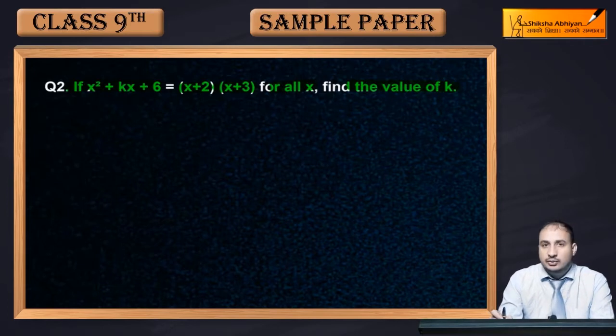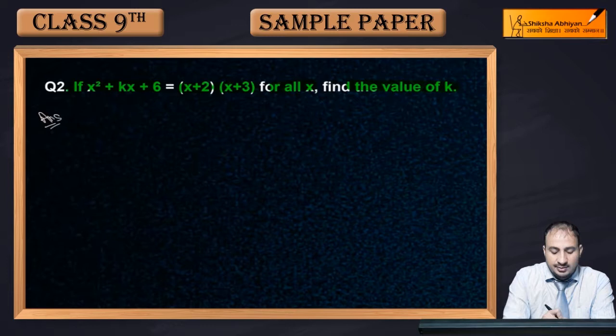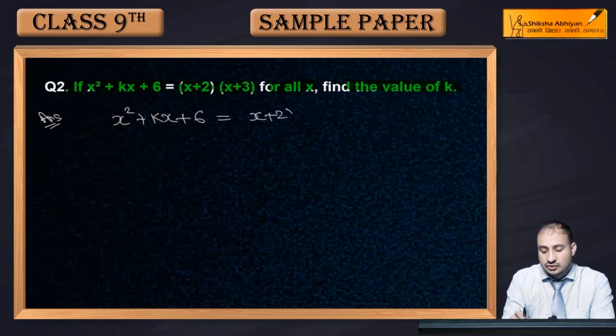You have to find the value of k. So this equation is given. First of all, the left hand side of the equation is x² + kx + 6, and the right hand side is (x+2) into (x+3) which is in multiply.